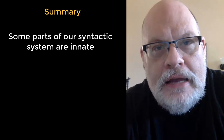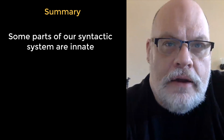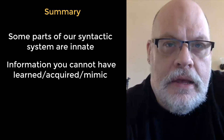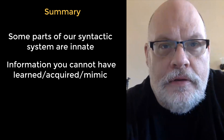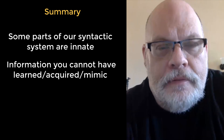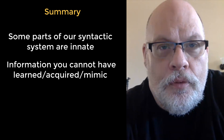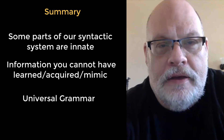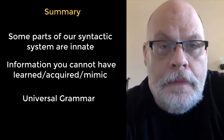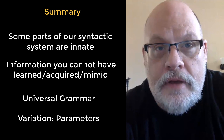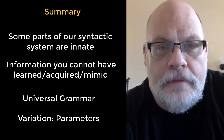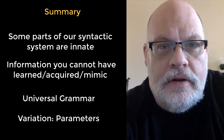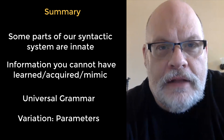To sum up, what we've argued for here is that some parts of language have to be innate — they involve information that you cannot have learned and you cannot have mimicked. So what we've had to do is propose that there's a universal grammar, something that is innate and inborn. We're able to explain the fact that languages differ from each other by making use of the notion of parameters: within the universal system, there are sets of information that require input from specific languages to be set.